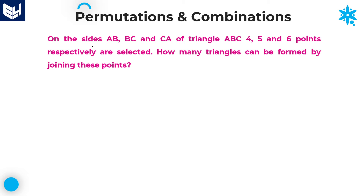This next question is very important. It is one more model asked in a different approach. On the sides AB, BC, and CA of triangle ABC, 4, 5, and 6 points respectively are selected — 4 points on side AB, 5 points on side BC, and 6 points on side CA.